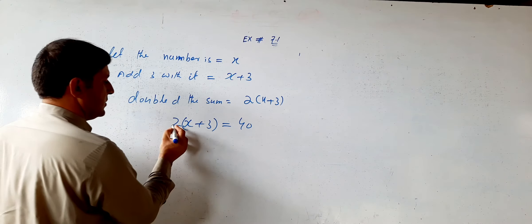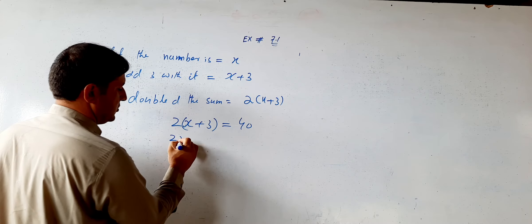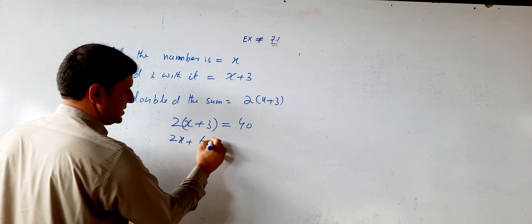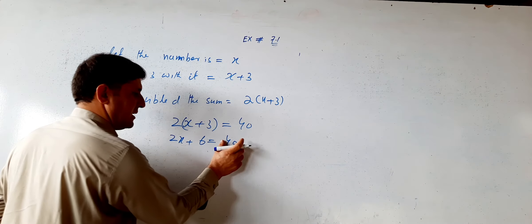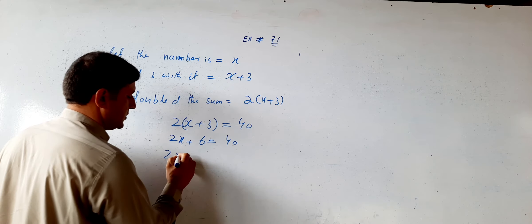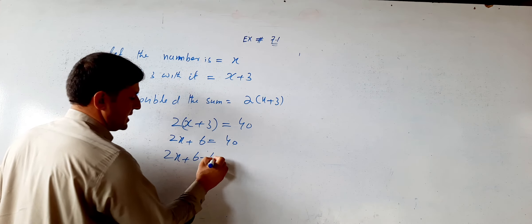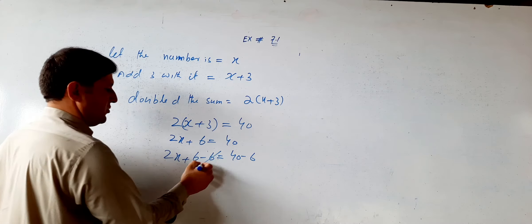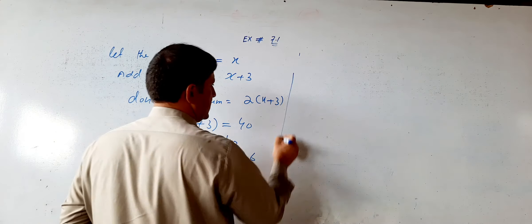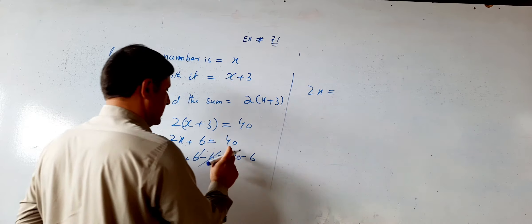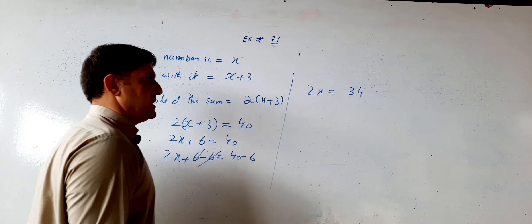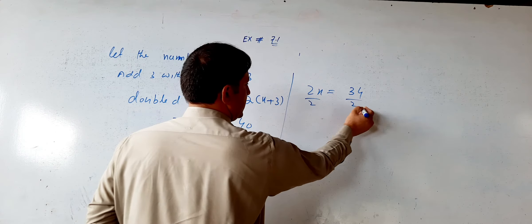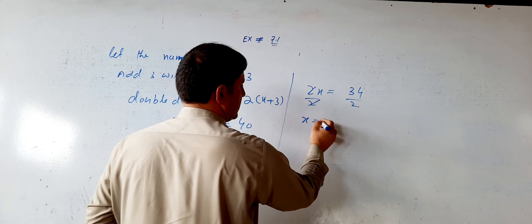Expanding: 2x + 6 = 40. Move the constant to the right side: 2x = 40 − 6, so 2x = 34. Divide both sides by 2; the twos cancel and x = 17.